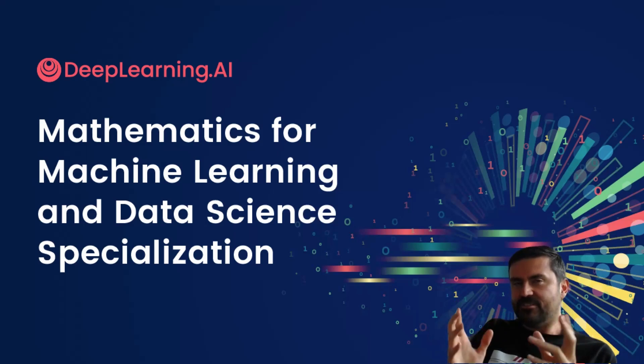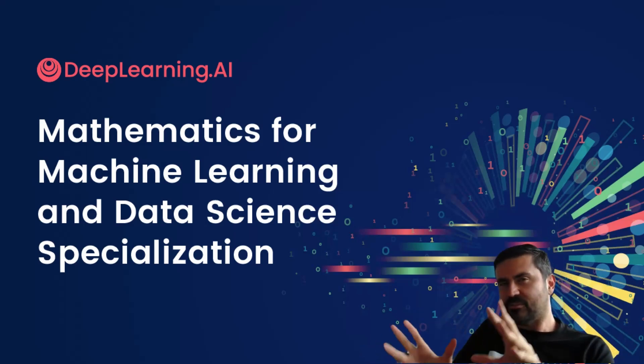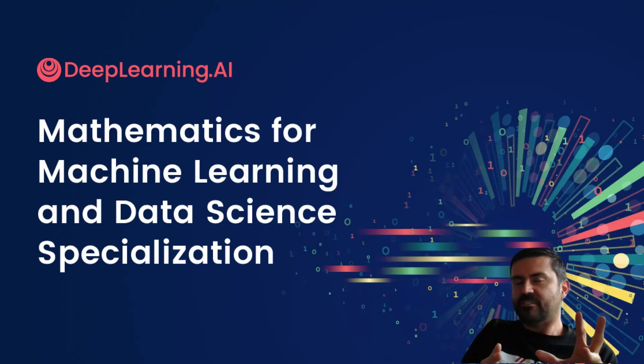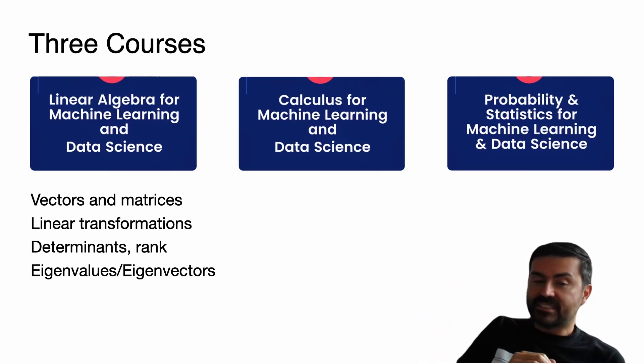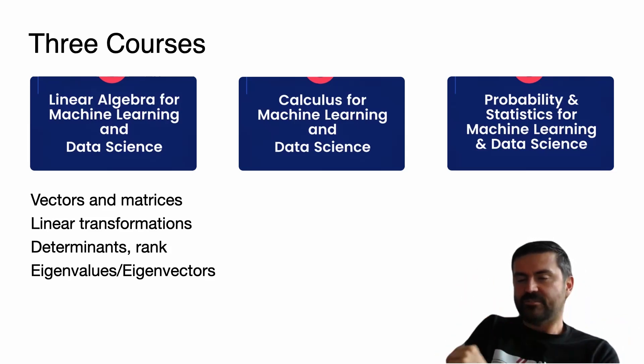But in a way that is fun for everyone and easy to understand for everyone. Because before the formulas we give you a really good intuition of things with real life examples and with really nice friendly diagrams. The specialization has three courses. The first one is Linear Algebra for Machine Learning and Data Science. In this one you learn things like vectors and matrices, linear transformations, determinants, rank, eigenvalues, eigenvectors, PCA - a lot of cool stuff. You'll get a good intuition for the linear algebra that's needed for machine learning.